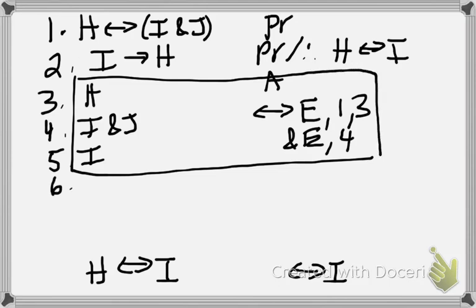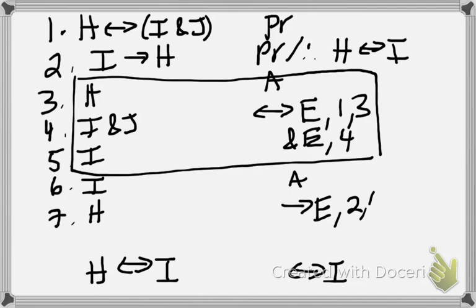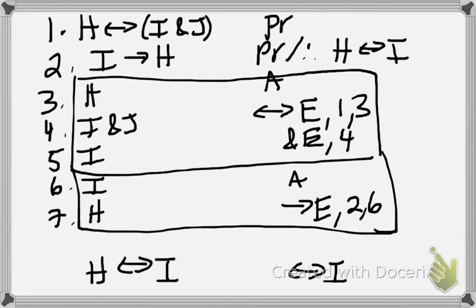So then we are ready to conclude H if and only if I. Next, we assume I and try to get to H. That's quite easy, because we can get that by arrow elimination using lines 2 and 6. We put that in a box, and then we are ready to conclude H if and only if I, citing lines 5 and 7.